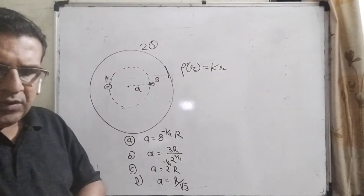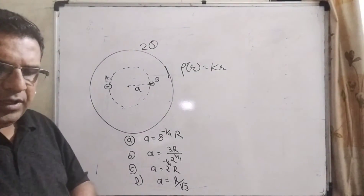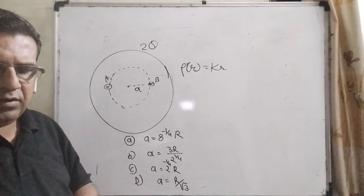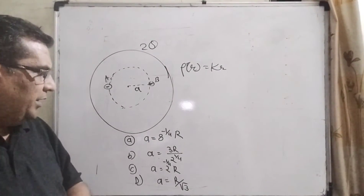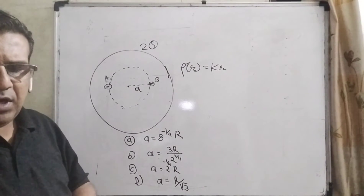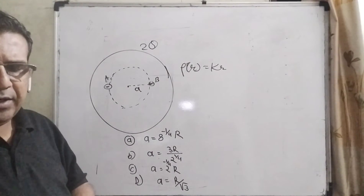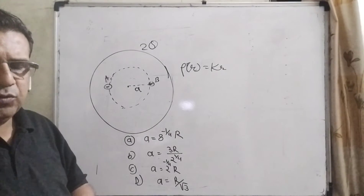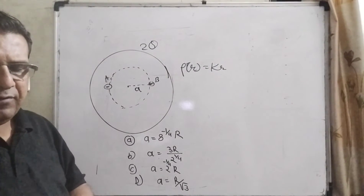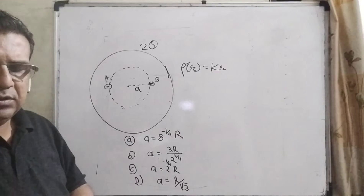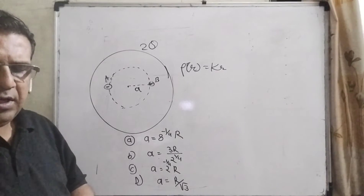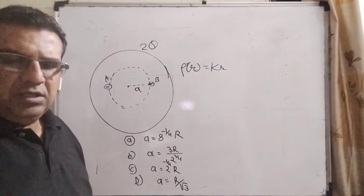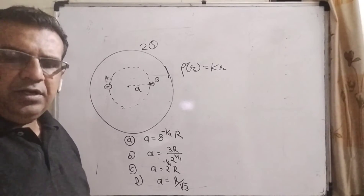...you have given four options. Option A: a = 8 raised to the power minus 1/4 times R. Option B: a = (3R/2) raised to the power 1/4. Option C: a = 2 raised to the power minus 1/4 times R. Option D: a = R divided by root 3. This question is asked in JEE 2019.